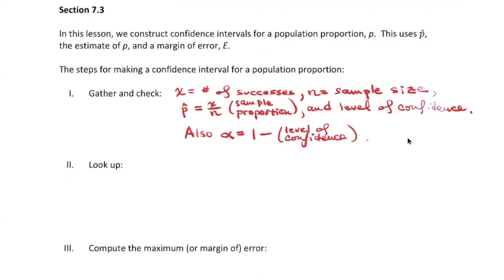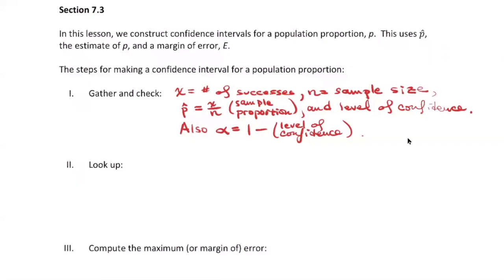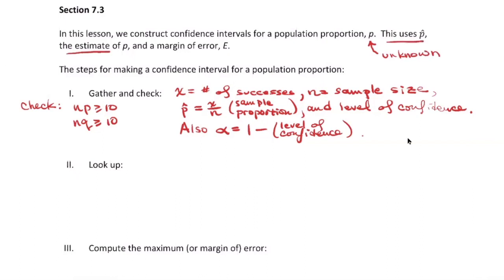There's also a check you have to do. The check should be that Np is at least 10 and Nq is at least 10. However, you won't be able to check those directly because the population proportion p is required for that, and p is unknown — we are going to be estimating it. We use p-hat as the estimate for p, and we compute the margin of error from that estimate.